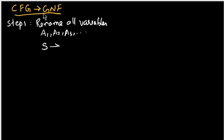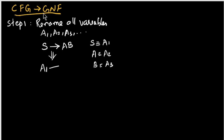For example, if we have a production like S gives AB, we rename every variable. There are three variables: capital S, capital A, and capital B. So S is renamed as A1, A is renamed as A2, and B is renamed as A3. The production is rewritten as A1 gives A2 A3. Also, before starting, make sure the grammar is in Chomsky Normal Form first, then apply these steps.